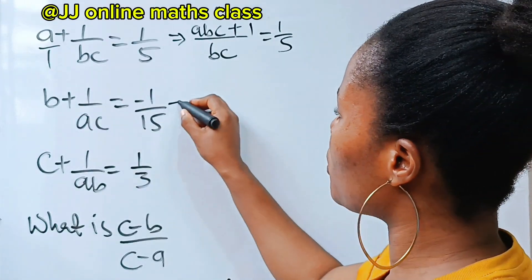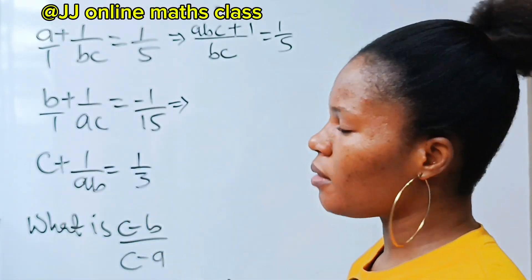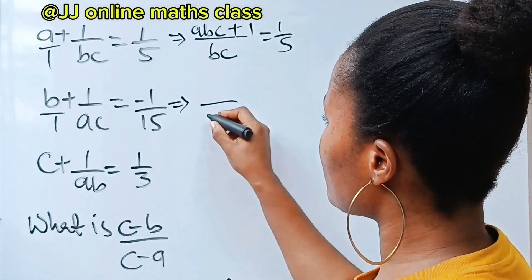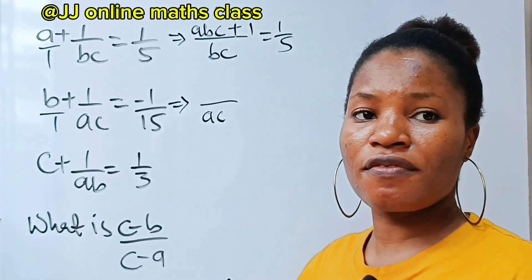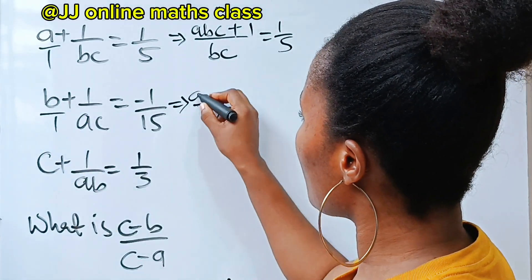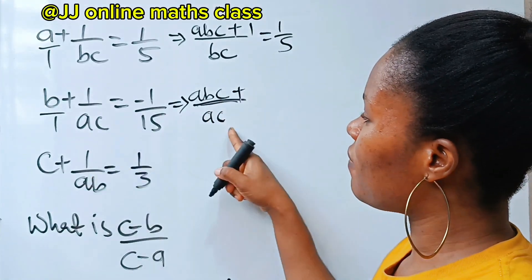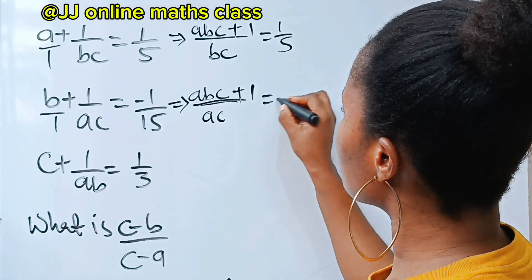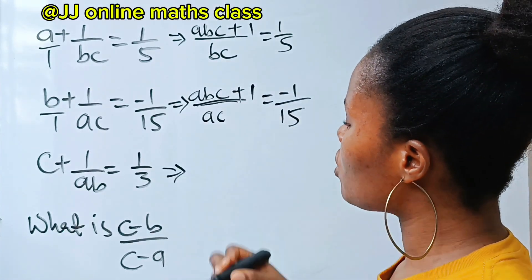For the second equation, we are going to do the same. The LCM is ac. 1 divides ac, you'll have ac. ac times b is still abc, plus ac divides ac, you'll have 1. 1 times 1 is 1. This is equal to minus 1 over 15.